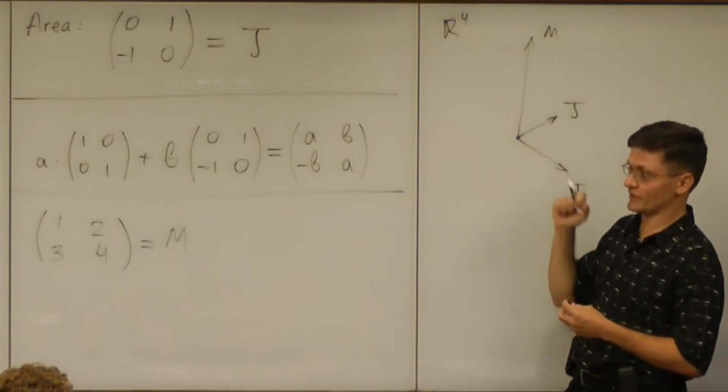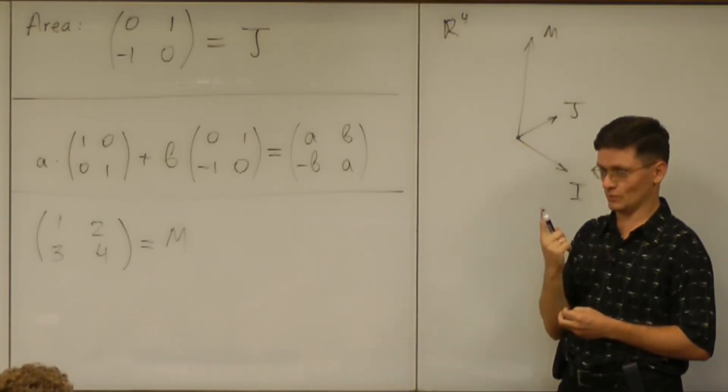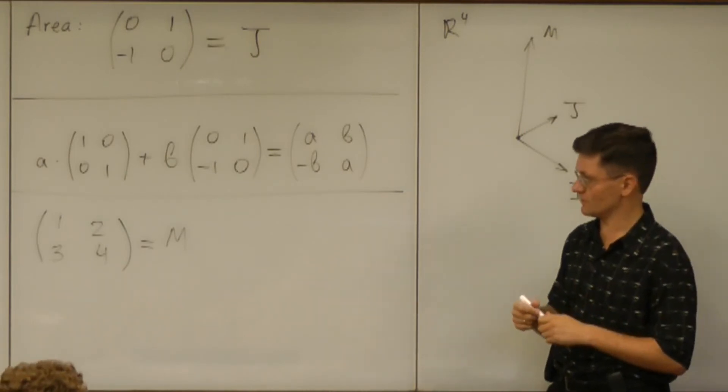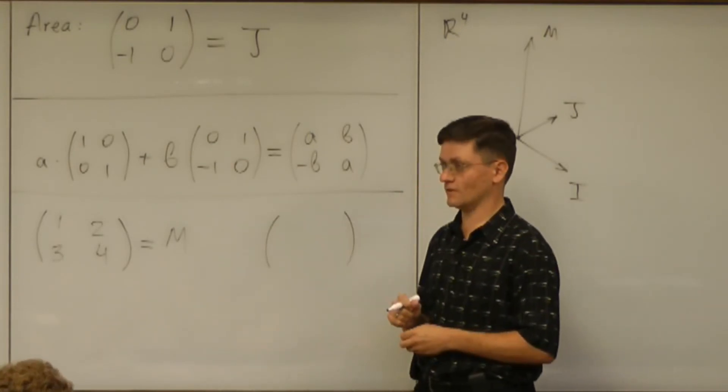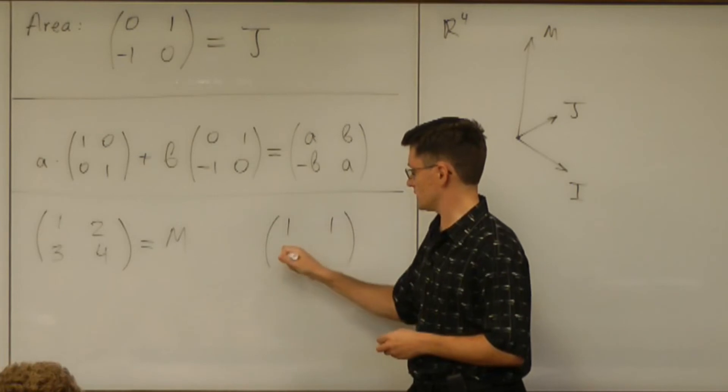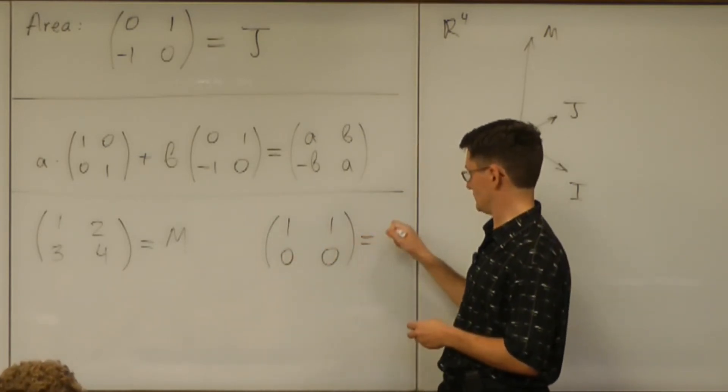But then, you have three in four dimensional space. You need one more. How would you choose the last one? One, one, zero, zero. You might try that. Let's call it N.